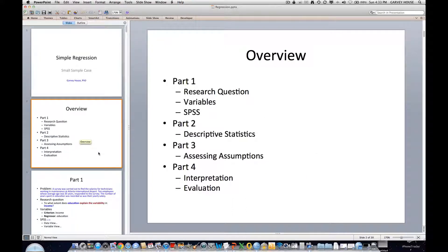In this lesson, we'll cover four parts to simple regression, beginning with a research question and the variables that make it up. I'll also include some SPSS tutorials. The second part covers descriptive statistics, followed by assessing assumptions, and then in part four, we will interpret the various statistical outcomes and evaluate them.